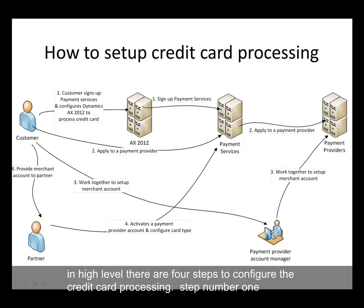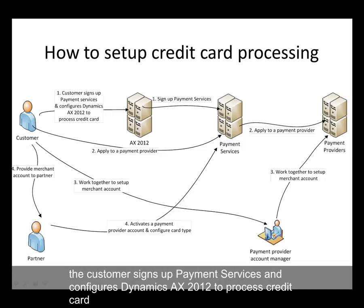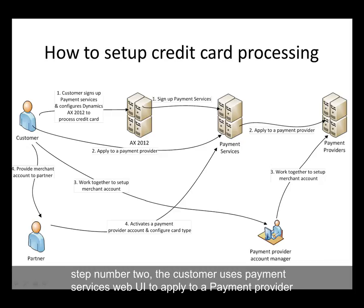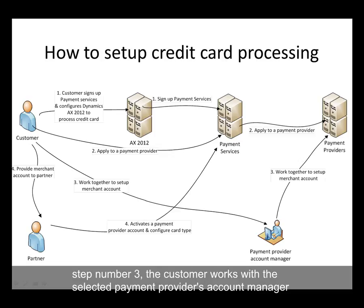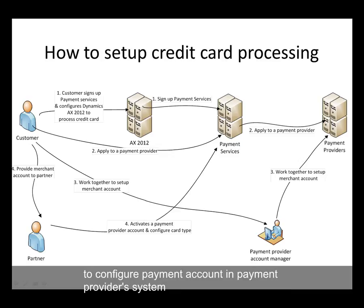At a high level, there are four steps to configure credit card processing. Step one, the customer sets up payment services and configures Dynamics AX 2012 to process credit cards. Step two, the customer uses the payment services web UI to apply to a payment provider. Step three, work with the selected payment provider's account manager to configure the payment account in the payment provider's system.